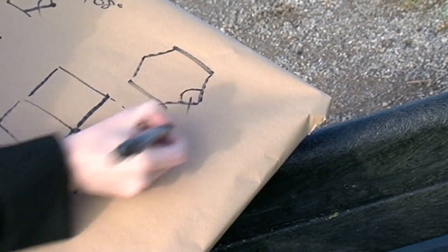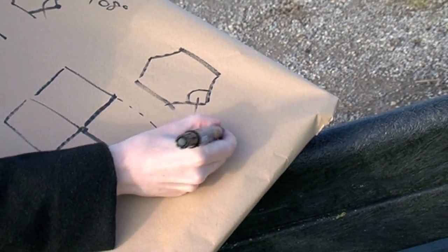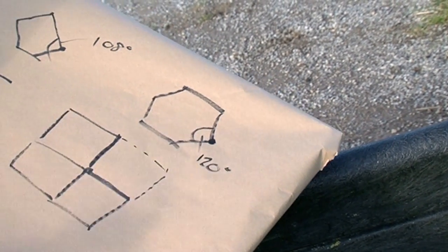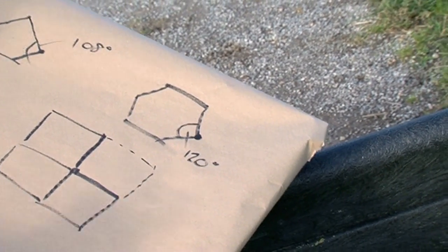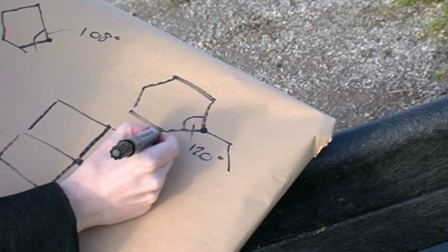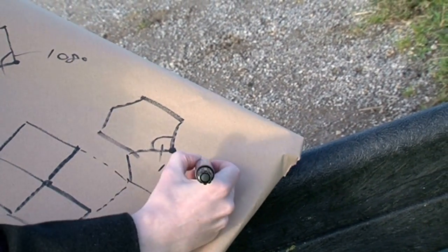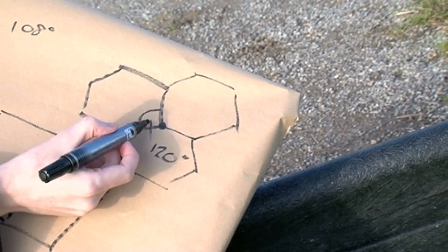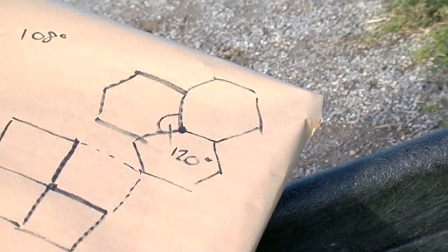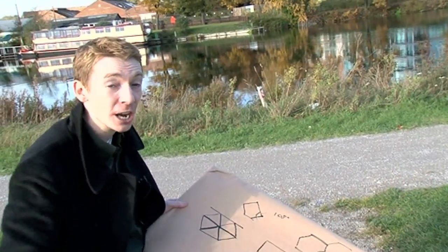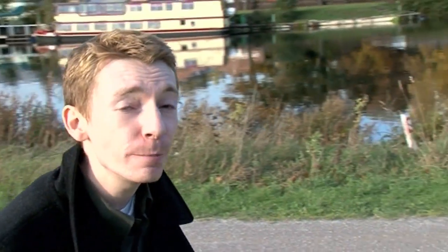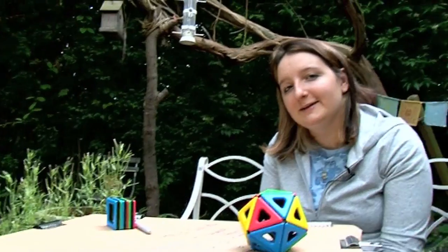Let's try hexagons. Hexagons have an angle of 120 degrees. If you try three hexagons around a point, that adds up to 360 degrees — it's flat, it makes a flat shape, not a solid. After that, if you're looking at seven-sided or eight-sided shapes, the angles are too big and they don't make regular solids at all.